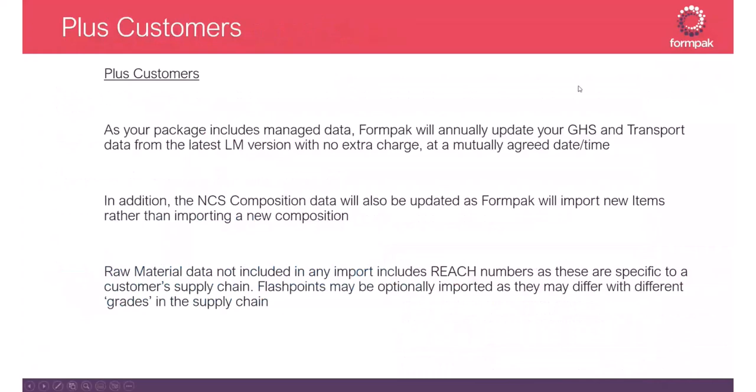For Plus customers — those who pay for FormPack to manage their data — this is done by ring-fencing ingredients that appear in the labeling manual with their GHS and transport classifications. Customers aren't allowed to modify those directly, but can use them in formulations and other raw materials or copy the data from them. Because these are kept separate, it's possible to automatically repopulate those items with new data, and also NCS compositions, replacing them with new versions.